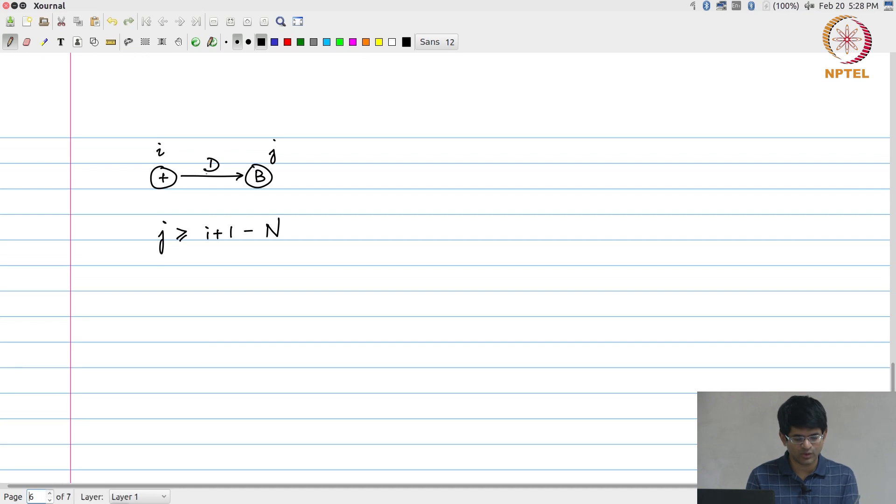Whereas if there was one sample delay, then j must be greater than or equal to i plus 1 minus n, because it was n clock cycles earlier that the corresponding sample that I need to use for b was produced. If this is an adder with some n delays on it, and this is i and this is j, now j must be greater than or equal to i plus 1 minus w times n.